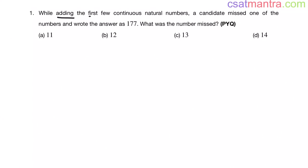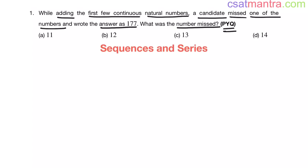While adding the first few continuous natural numbers, a candidate missed one of the numbers and wrote the answer as 177. What was the number missed? This is a previous year question from sequences and series chapter.